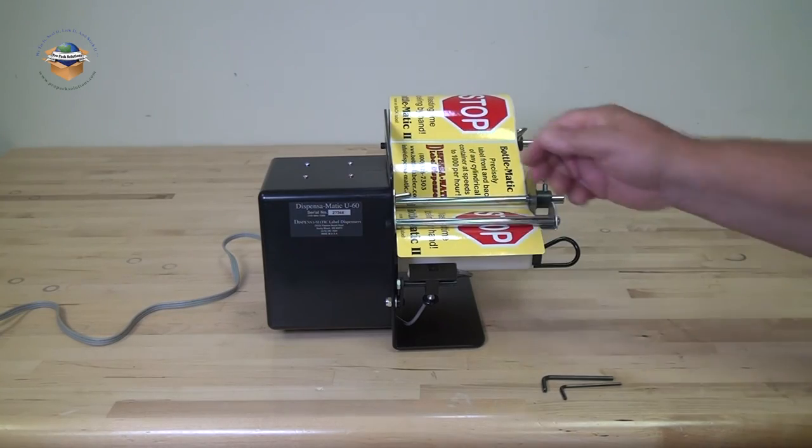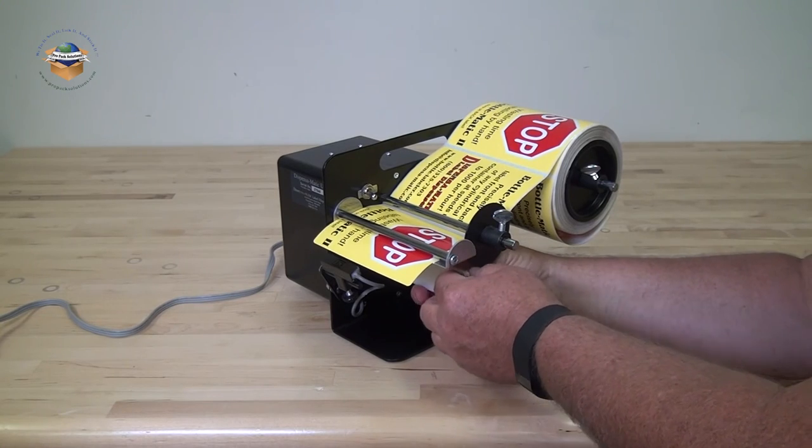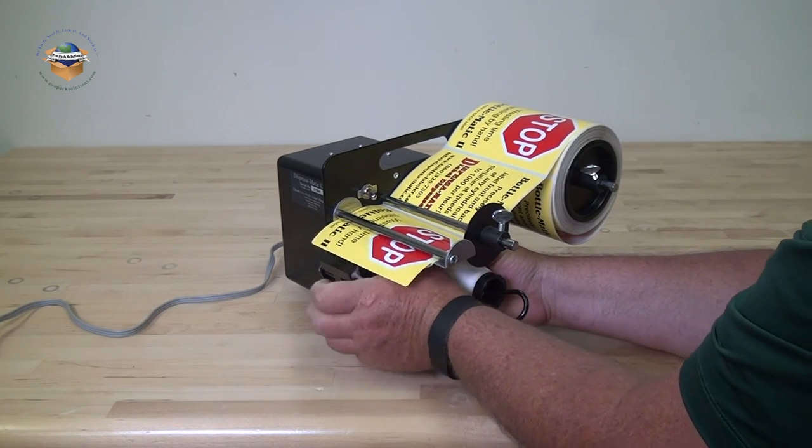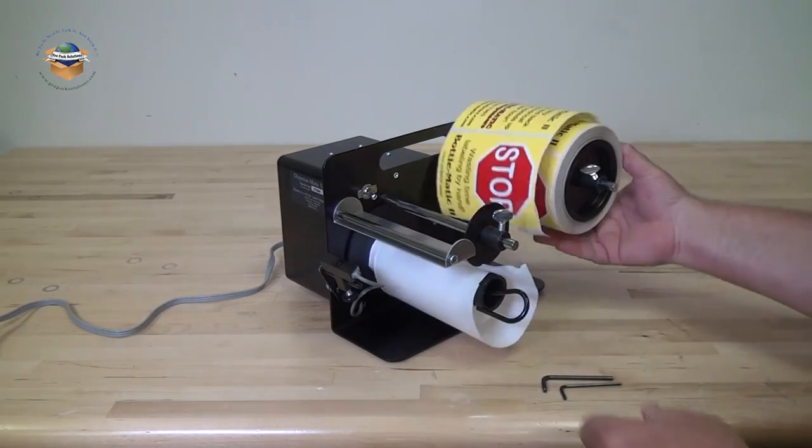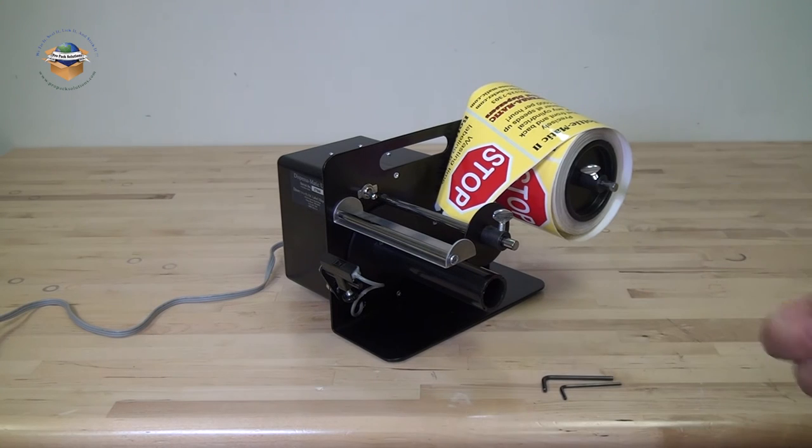When you're finished, shut the unit off. And then you want to take your liner and cut it. Pull your spring clip out and then slide your liner material off.